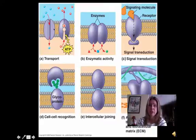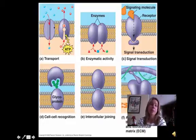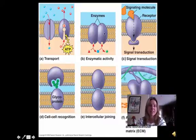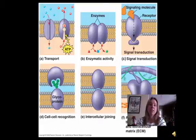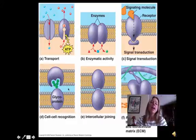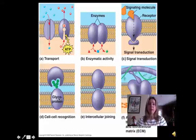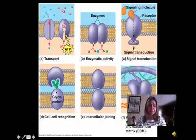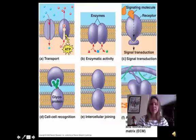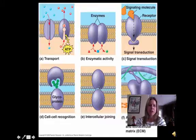The first function membrane proteins have is transport — they help molecules get from one side of the membrane to the other, or keep certain molecules out. They can also do enzymatic processes, acting as a catalyst for chemical reactions in the cell. They can act as signalers: for example, a cell in the pancreas gets a signal that clicks into this protein, which transmits the signal to the inside of the cell so it can start making insulin.